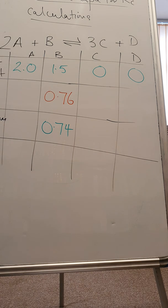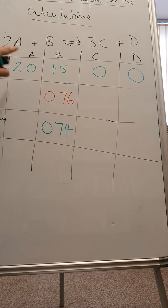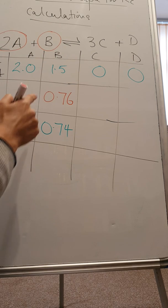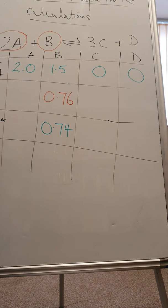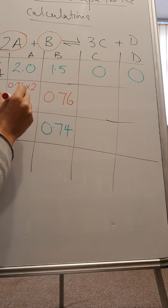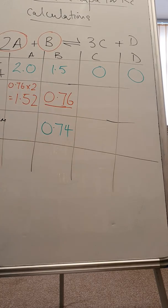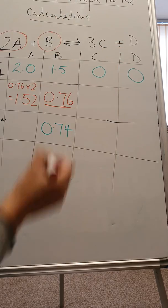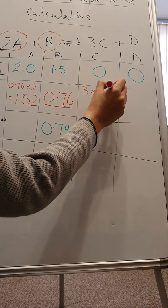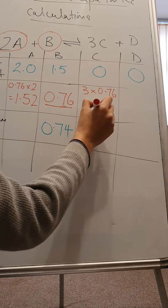If 0.76 of B has reacted, then looking at your molar ratio, 2 of A to 1 of B, then the amount of A reacted is 0.76 times 2, which is 1.52. Now 0.76 of B forms 3 moles of C, so for C, 3 times 0.76, which equals 2.28.